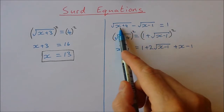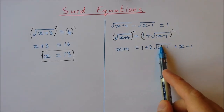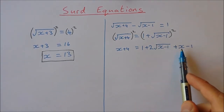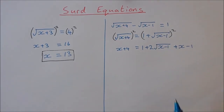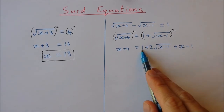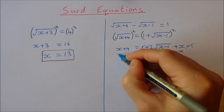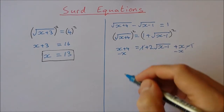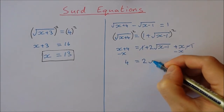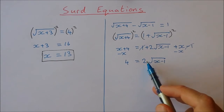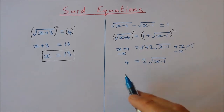By isolating one of the square roots and then squaring both sides, we've gone from an equation with two square roots to one with only one. Now we'll do the same thing again — isolate this square root and square both sides. On the right-hand side, 1 and minus 1 equal 0. Taking x away from both sides leaves 4 equal to 2 times the square root of x minus 1.